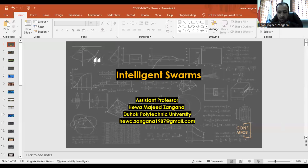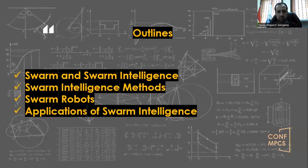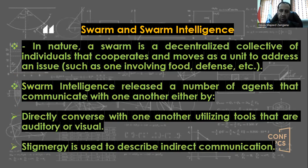Let's start with the topic directly. My topic is about artificial intelligence, and specifically a field within AI which is the next step, called intelligent swarms, or swarm intelligence. I will tell you what swarm means, then we go to swarm intelligence and how intelligence starts at this level. Today I will show some methods of swarm with some swarm robots and their applications.